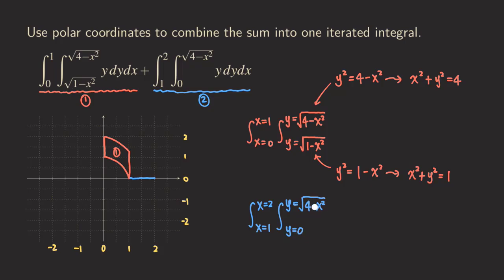The upper limit is the same circle of radius two, and we are getting the top portion of that circle, going from zero to this radical. We continue down, and X goes from one to two, which gives us region two.